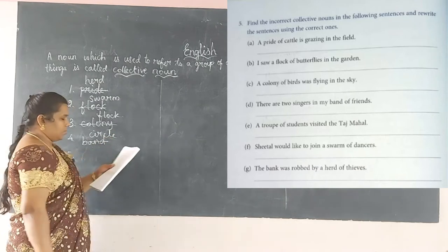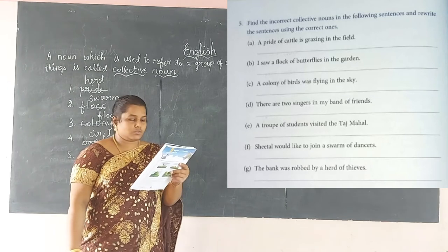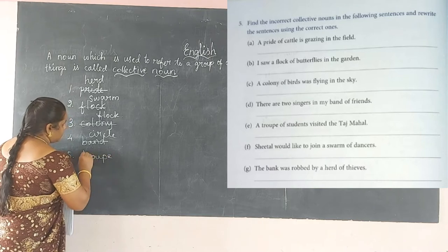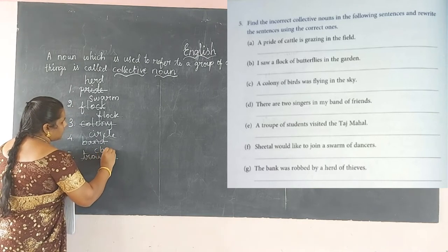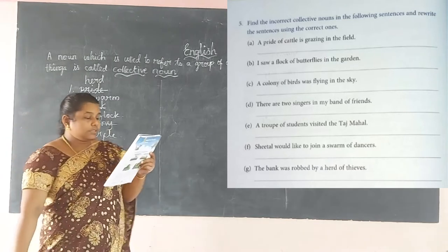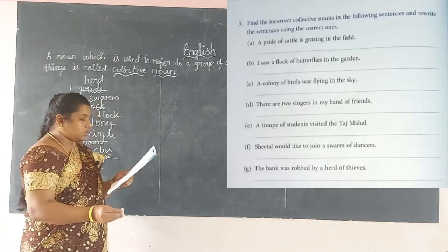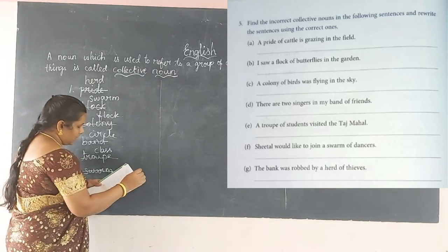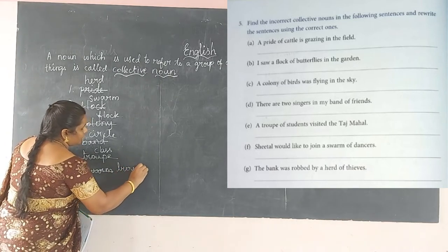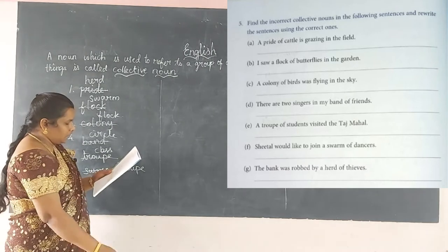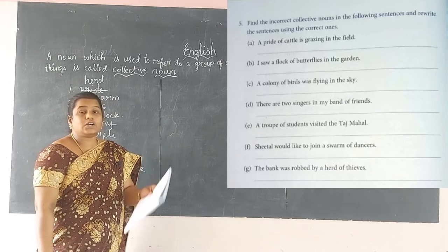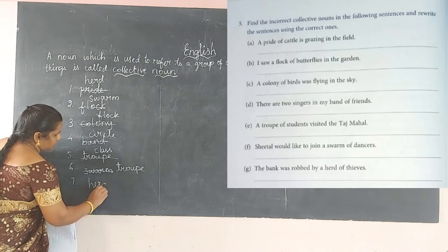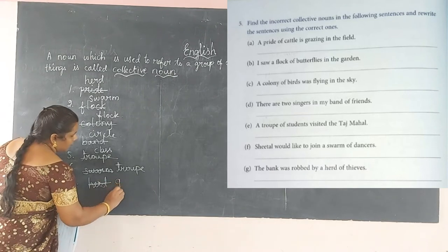Sixth: 'Seetal would like to join a swam of dancers' — 'swarm' is for bees or butterflies; here the correct form is 'troop of dancers.' Seventh: 'The bank was robbed by a herd of thieves' — 'herd' is used for cattle; so strike out 'herd' and write 'gang of thieves.'